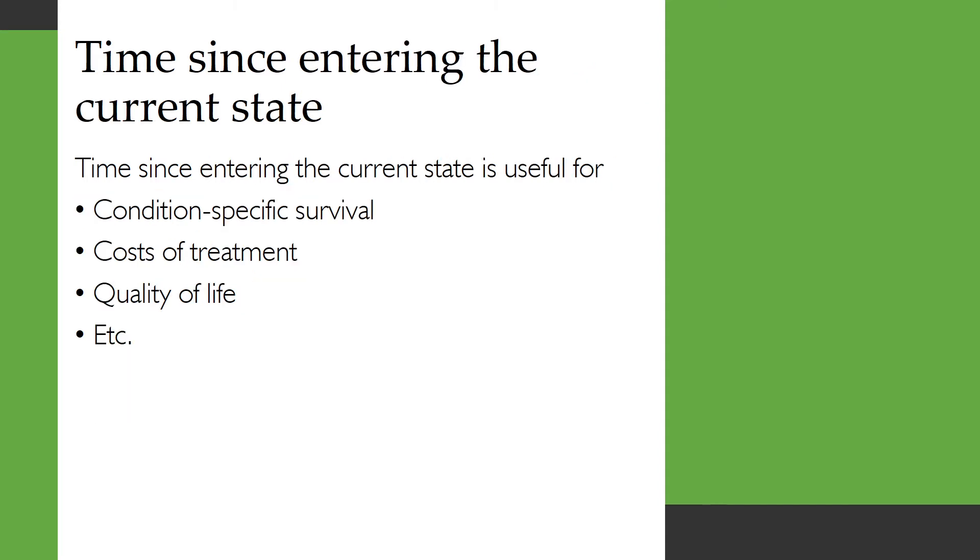On the other hand time since entering the current state which was called sojourn time is useful for other things such as the condition-specific survival for a disease or the cost of treatment which could start off high but then drop as a disease is stabilized. Quality of life also can be initially low after a diagnosis and then improve or can start to decline as people approach the end of life.